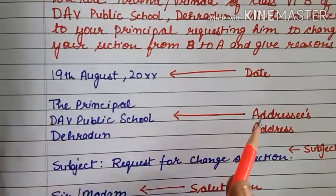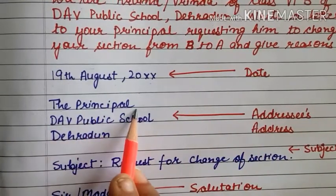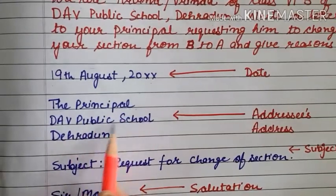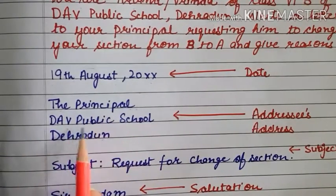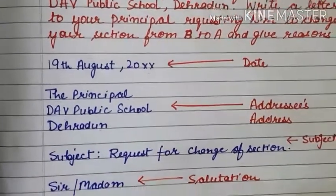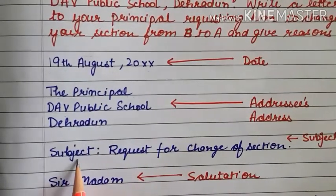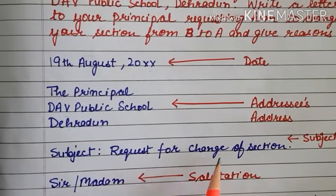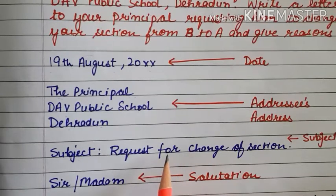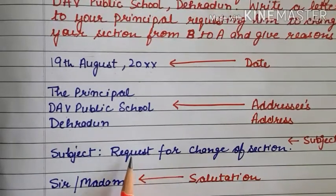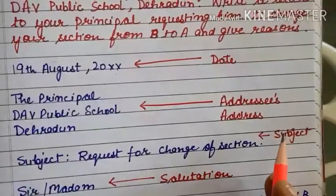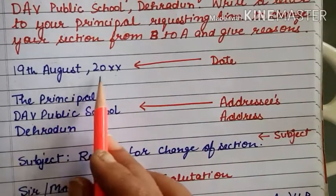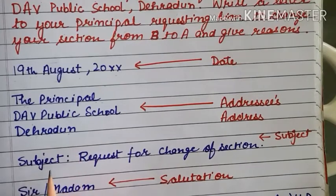Then, you write the address. First, write the designation of the person you are writing to, then the school's name, then the place's name. For example: The Principal, DAV Public School, Dehradun. Then you will mention the subject — what your application is about, so your sir or ma'am can understand it immediately. Here we will write: 'Request for change of section.' Write it simply, then leave a line gap before the salutation.